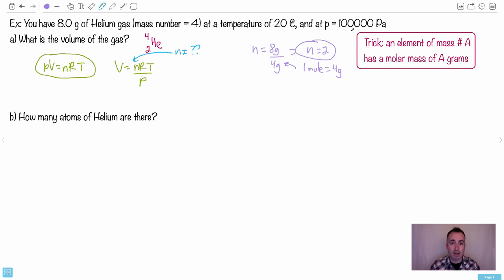So because helium has a mass number of 4, it's got a molar mass of 4 grams. That means one mole is 4 grams. I've got 8 grams of it. Eight is double 4, so that's how I know I have 2 moles. I've got double the amount of the molar mass, so now I know that n equals 2.